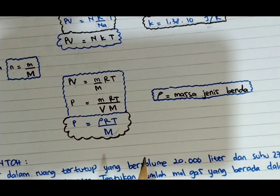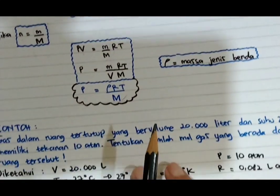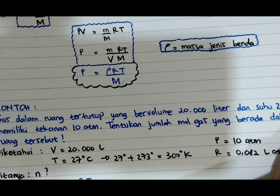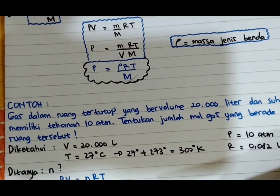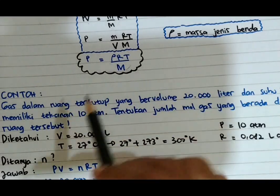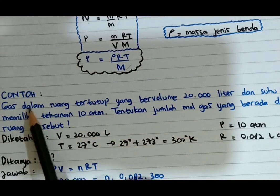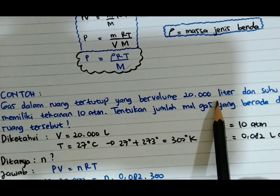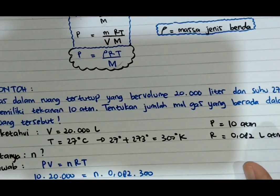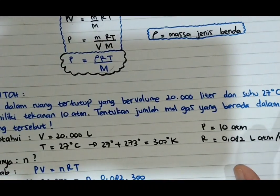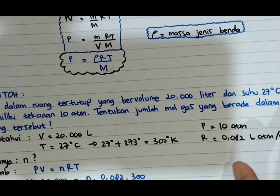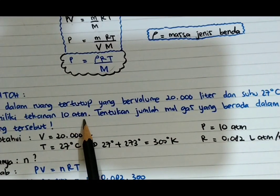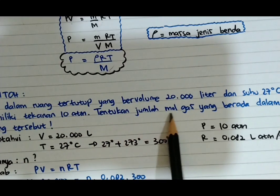Untuk lebih jelasnya, kita masuk saja ke dalam contoh soal. Contoh soal pertama: gas dalam ruang tertutup yang bervolume 20.000 liter dan suhu 27 derajat Celsius memiliki tekanan 10 atmosfer. Tentukan jumlah mol gas yang berada dalam ruang tersebut.